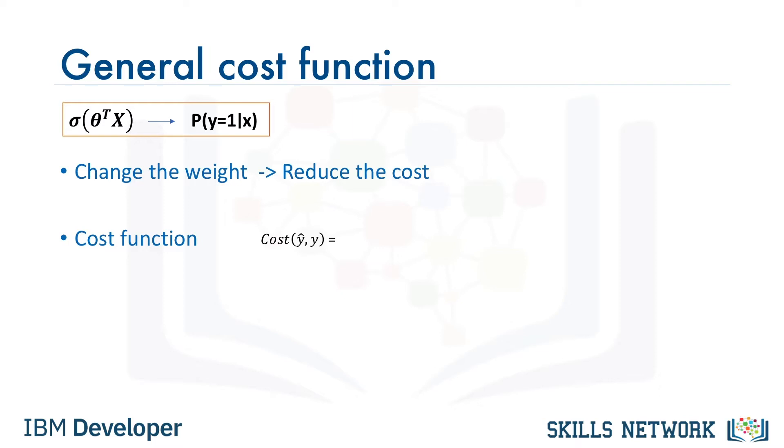Let's first find the cost function equation for a sample case. To do this, we can use one of the customers in the churn problem. There's normally a general equation for calculating the cost. The cost function is the difference between the actual values of y and our model output, y-hat. This is a general rule for most cost functions in machine learning.